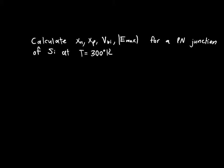In this video we're going to do a PN junction example. Calculate XN, the depletion width on the N side, XP, the depletion width on the P side, the built-in potential VBI, and the maximum electric field strength for a PN junction of silicon at temperature 300 Kelvin. The doping on the N side, ND, is 10^16 per centimeter cubed and the doping on the P side, NA, is 2×10^17 per centimeter cubed.